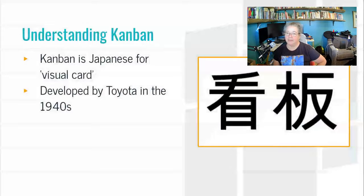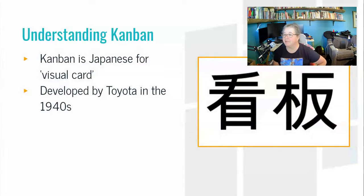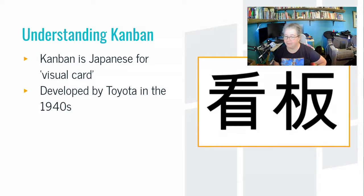To understand Trello, you might want to understand that it's based on a system called Kanban. Kanban is Japanese for visual card. It was developed by the company Toyota in the 1940s and has been used in various iterations ever since.